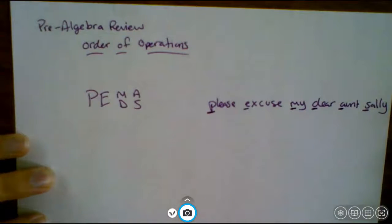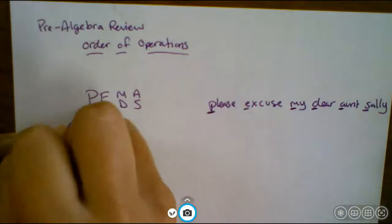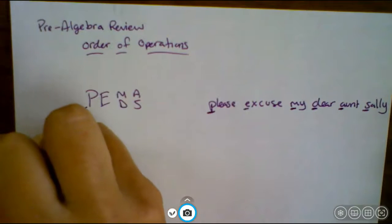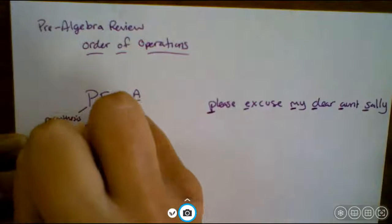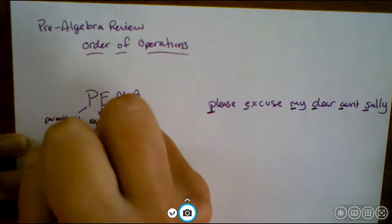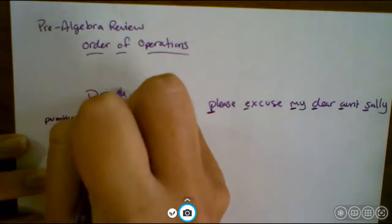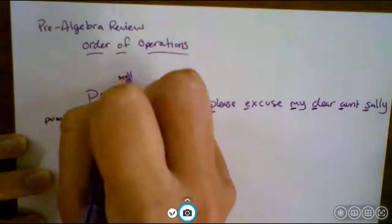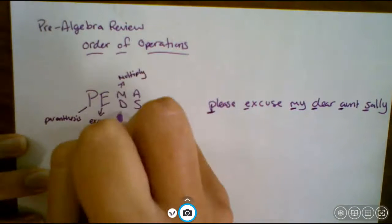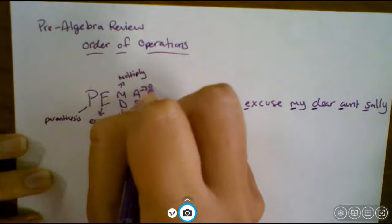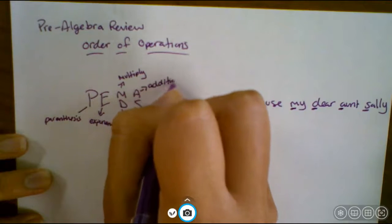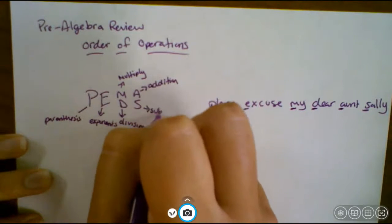The P stands for parentheses, so this is the order that you work out the problem. E is exponents, M is multiplication, D for division, A is addition, S is subtraction.